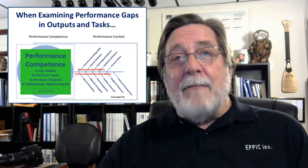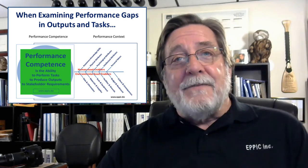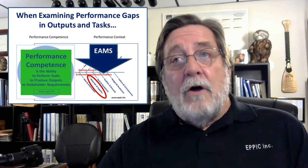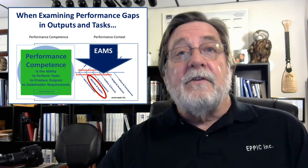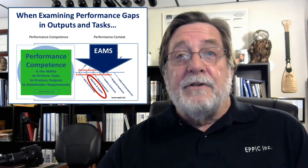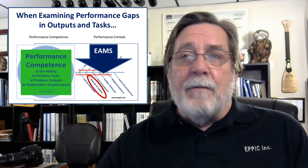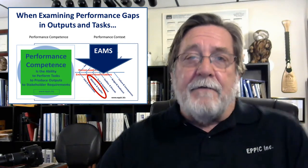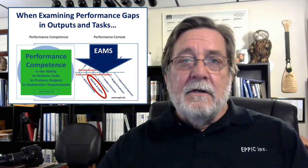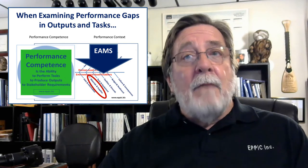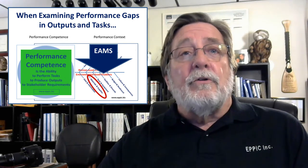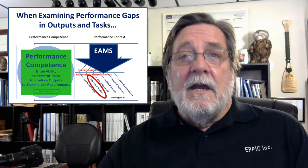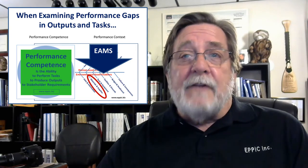When examining performance gaps in outputs and tasks, your second pass should also look at the environmental enablers such as adequate materials and supplies. Performance gaps are most often not due to knowledge and skill deficits. The material and supply systems might need to be redesigned to meet stakeholder requirements for outputs and the tasks, and then resourced adequately.